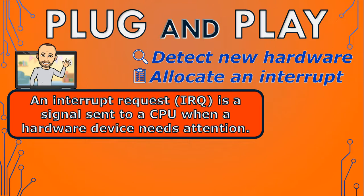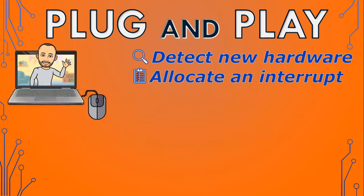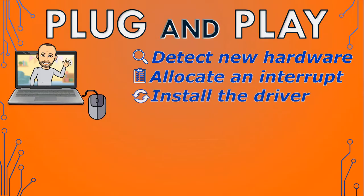When a hardware device needs to send a signal to the computer's CPU, it generates an interrupt request or IRQ. When the hardware device needs attention, the CPU temporarily stops what it's doing and handles the interrupt. Once the interrupt has been handled, the CPU resumes its previous task. Your computer will then automatically search for and install the necessary drivers needed to run the device from the operating system's pre-installed list.